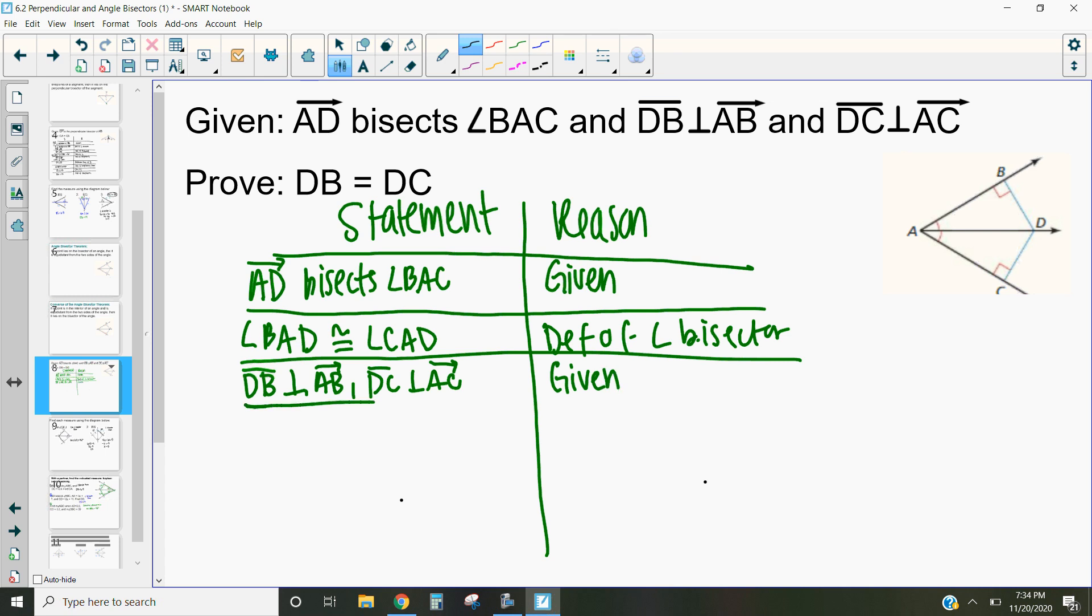Now what does that part of our given statement tell us? Well what that part of our given statement tells us is that the measure of angle DCA is equal to the measure of angle DBA which equals 90 degrees. Awesome. So that's by that definition of perpendicular.